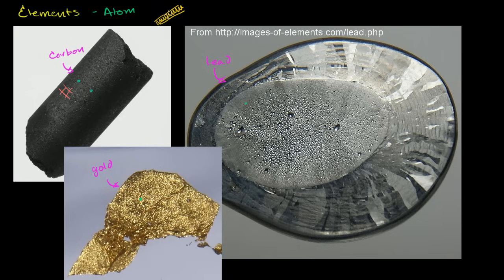You might guess: Sal already told me they're very small, so maybe there are a thousand carbon atoms, or ten thousand, or a hundred thousand. I would say no. There are one million carbon atoms — you could string one million carbon atoms across the width of the average human hair.